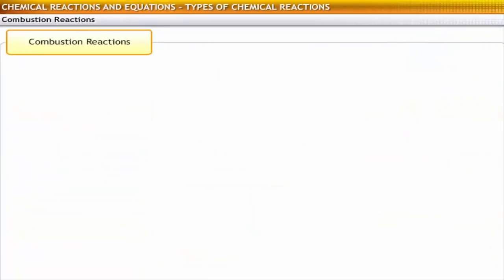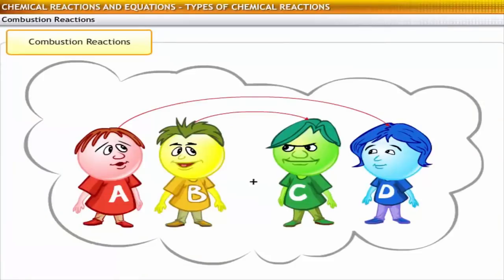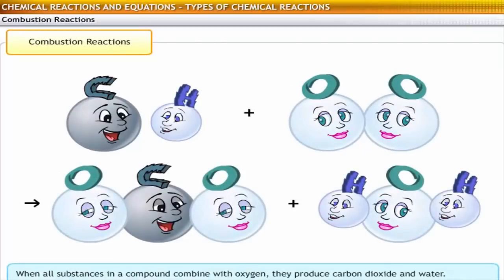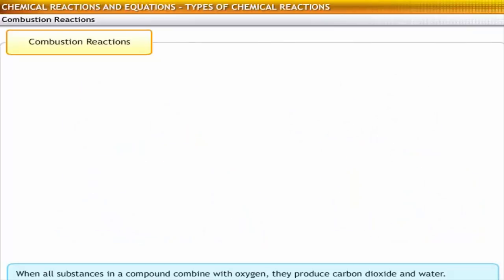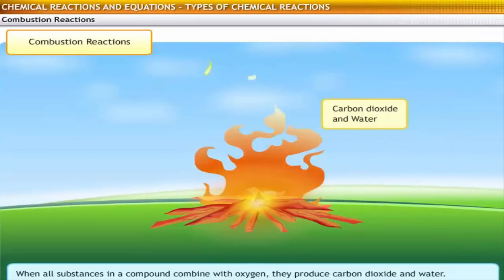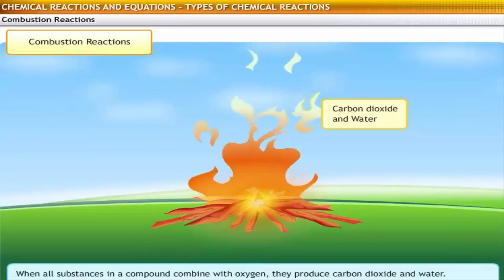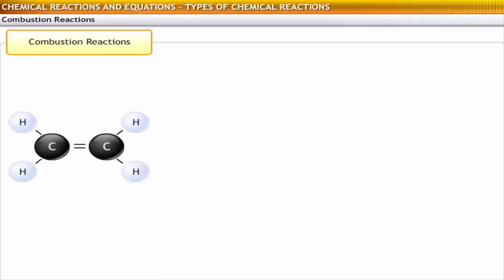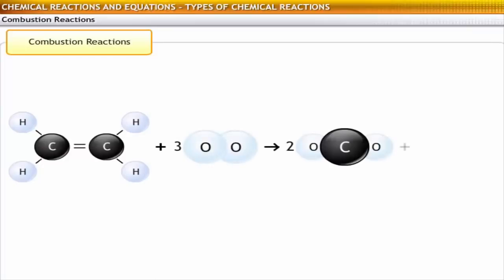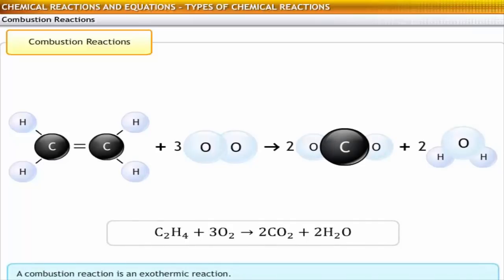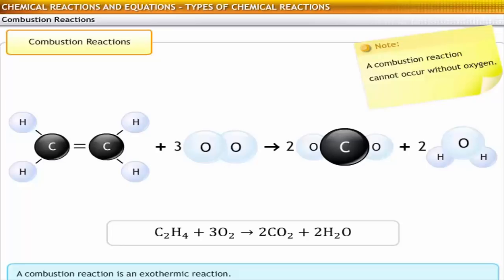In a combustion reaction, there is no exchange of ions. When all elements in a carbon compound combine with oxygen, they produce carbon dioxide and water. Thus, a combustion reaction is the burning of a substance in the presence of oxygen, resulting in the release of energy, carbon dioxide, and water. For example, ethylene burns in the presence of oxygen to produce carbon dioxide, water, and heat. As a combustion reaction results in the release of heat energy, it is an exothermic reaction. Remember, a combustion reaction cannot occur without oxygen.